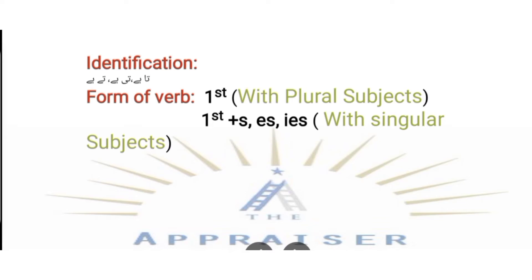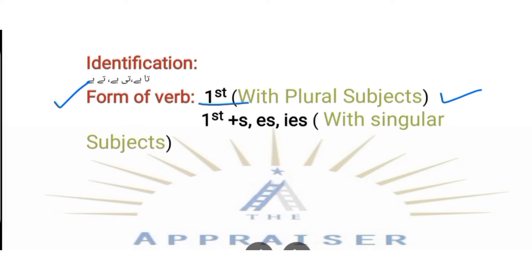The form of verb used in Present Indefinite Tense is the first form of verb. In the case of a plural subject — I, we, they, you — we use the first form of verb as it is. But in the case of a singular subject — like he, she, it — we add S, ES, or IES to the first form of verb, according to the word.